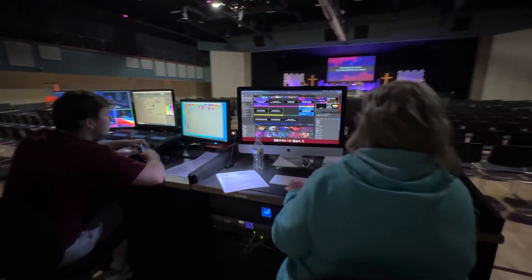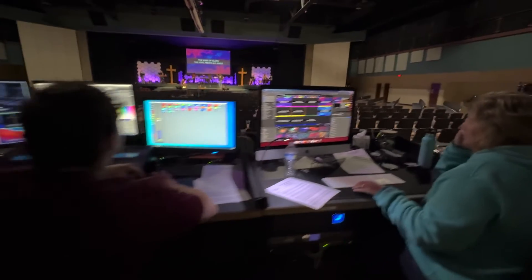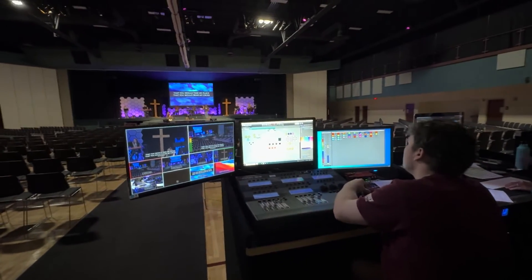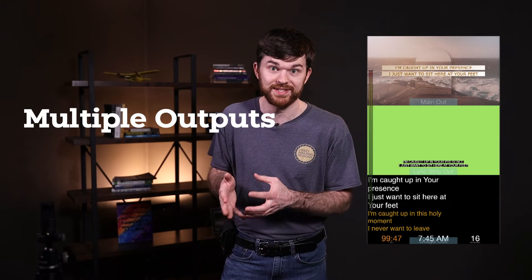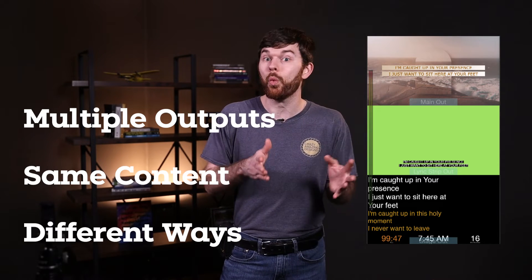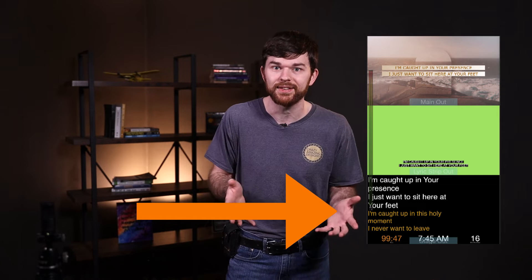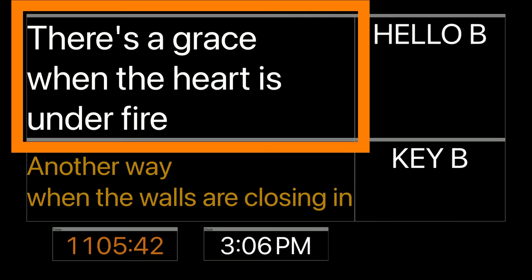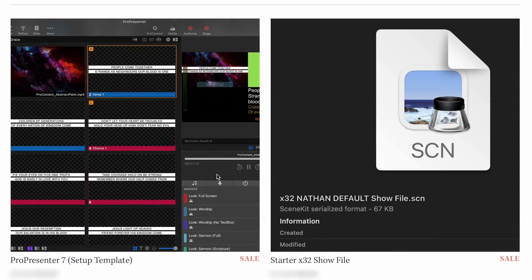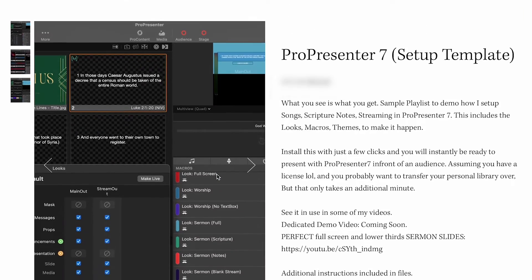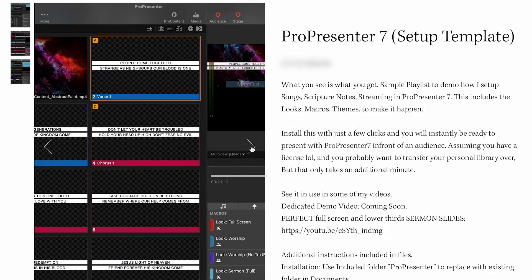So ProPresenter 7 is a worship presentation software that our church uses. And I've created a ton of videos on this topic. One advantage of ProPresenter 7 versus PowerPoint, for example, is that ProPresenter 7 can generate multiple outputs of the same content, but in different ways. So one output is the stage display for the band. This gives them the current slide text and the next slide text during a song. So I actually have a resource on a side note. I have a resource for ProPresenter 7 called the Pro 7 template available at crazyamazingdesigns.com.